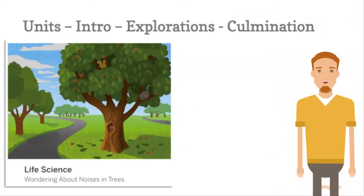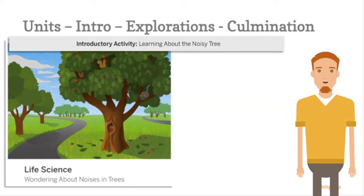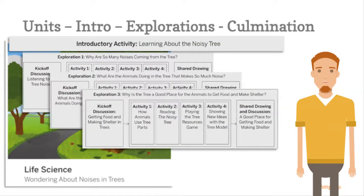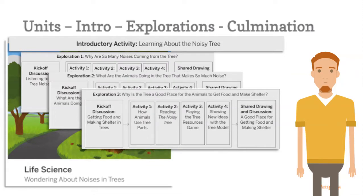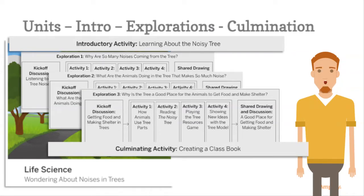The unit structure is easy to follow. Each unit begins with an introductory activity that introduces the phenomenon, followed by a series of three explorations. Every exploration has a kickoff discussion, four activities, and a shared drawing and discussion. These will have students investigating and collecting evidence to develop ideas about the phenomenon. A culminating activity brings it all together and demonstrates all that students have learned. The program is very flexible and can fit into all schedules, as each activity is stand-alone and short in duration.